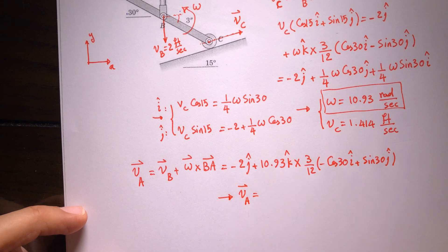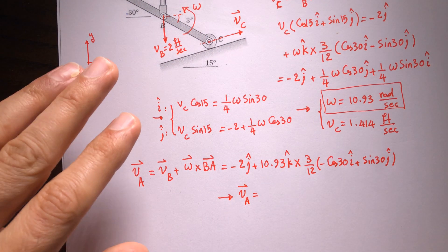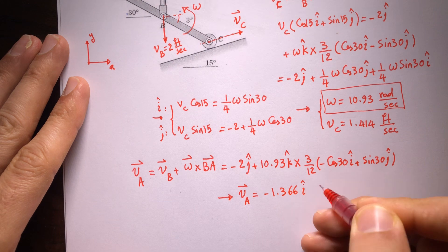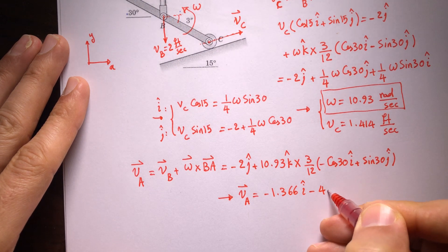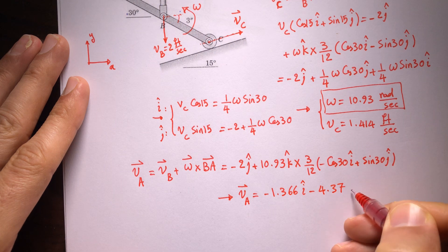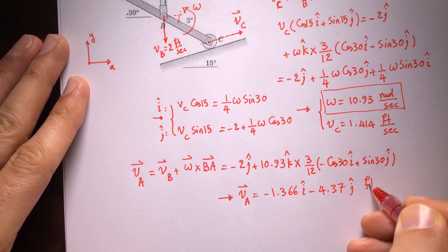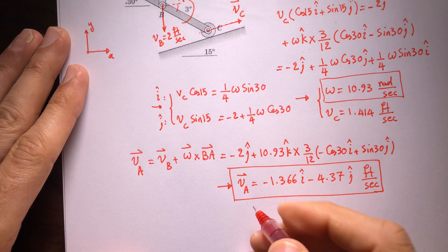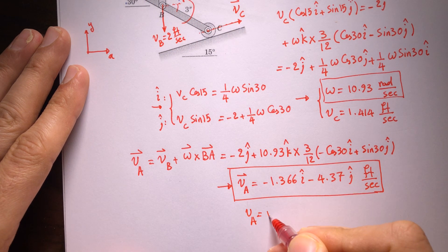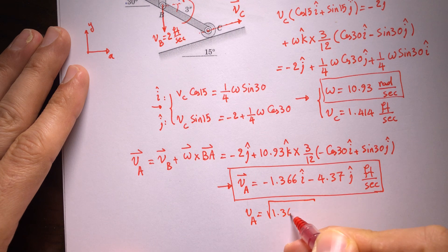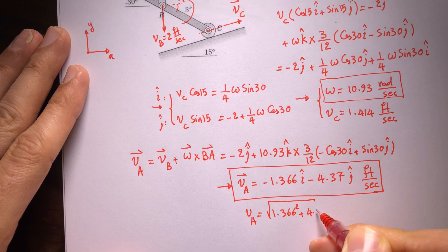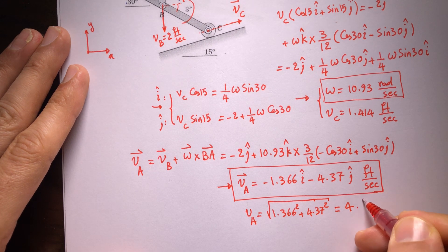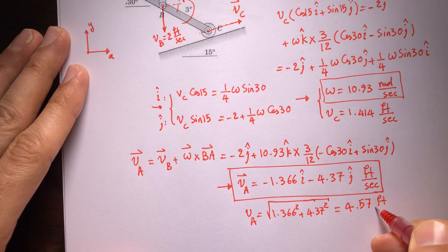The velocity of A works out to negative 1.366 I minus 4.37 J feet per second. The magnitude of the velocity of A is the square root of 1.366² plus 4.37², which equals 4.57 feet per second.